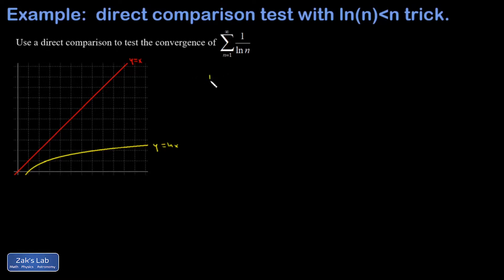In other words, we can say that natural log n is less than n. So that's going to be our plan for this direct comparison test. If the natural log of n is less than n, then one over the natural log of n is going to be bigger than one over n, because we're dividing by a smaller thing.